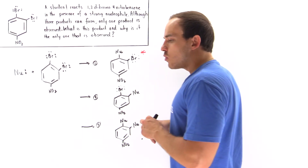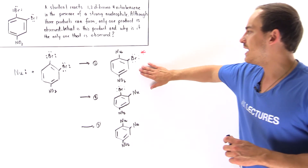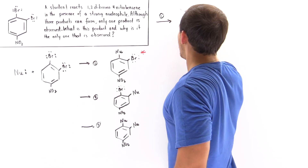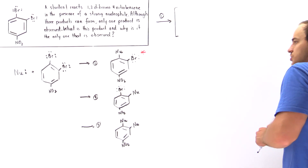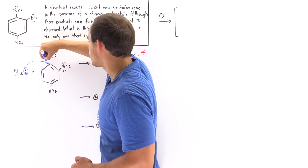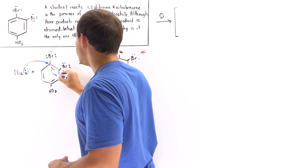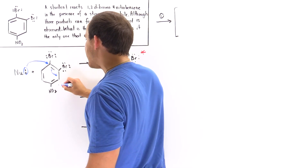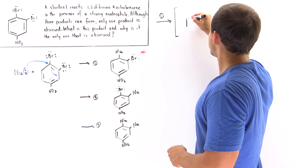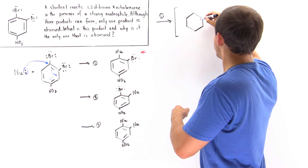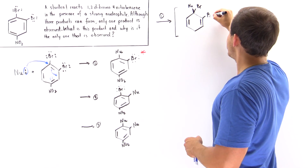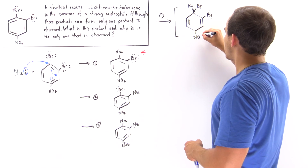To explain why product 1 is formed and why the others are not, we have to examine the intermediates that are formed. Let's begin with the intermediate formed when the reaction goes toward product 1. We have resonance stabilization — our nucleophile uses its two electrons to attack a specific carbon, displacing the pi bond, which forms a new pi bond and places the electrons onto an adjacent carbon. We form a molecule with two pi bonds, the nucleophile attached, one bromide not replaced, and the NO2 group.